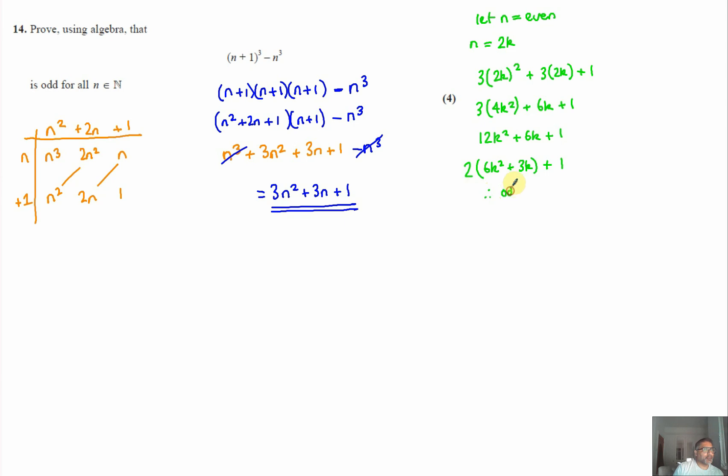Therefore, it's odd for all values of k. So we've proved so far that if it's an even number, your outcome to this expression will always be odd.